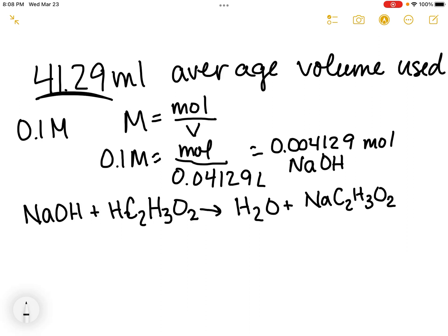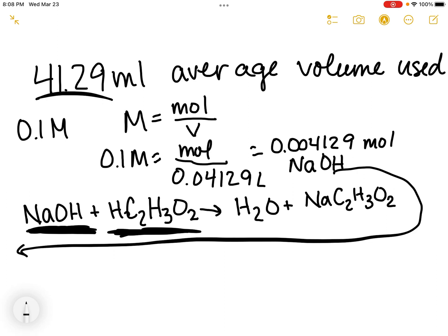Since it's a one-to-one mole ratio, we can say the number of moles of sodium hydroxide equals the number of moles of acetic acid. That means we have 0.004129 moles of acetic acid.